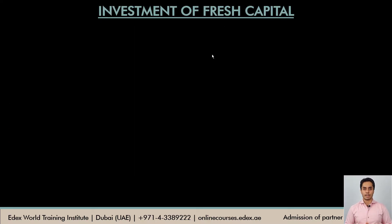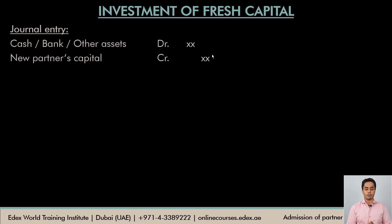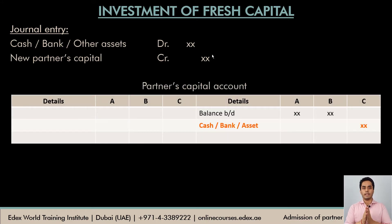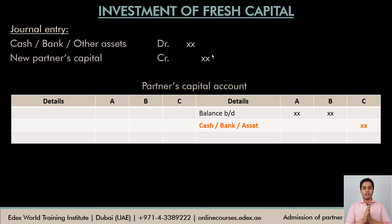The new partner could invest fresh capital in the firm at the time of admission. That capital could be in the form of cash, money in the bank, or any other asset. The accounting entry is straightforward — whatever asset comes into the business is debited (cash, bank, or any other asset), and the new partner's capital account is credited. In our examples, A and B are the old partners and C is the new partner. So the entry is made on the credit side in the C column, showing that the new partner is bringing in some asset as capital.